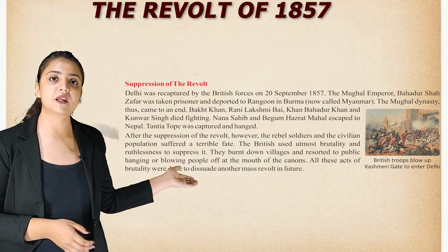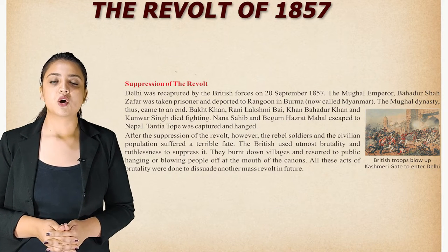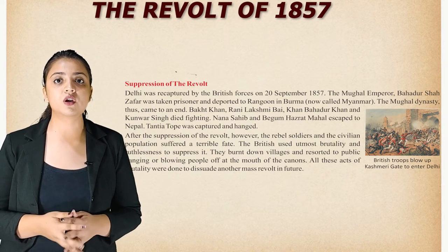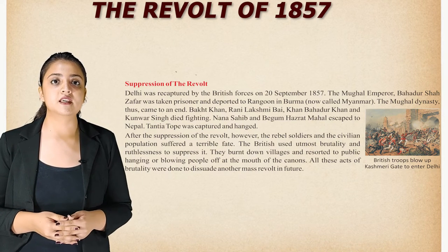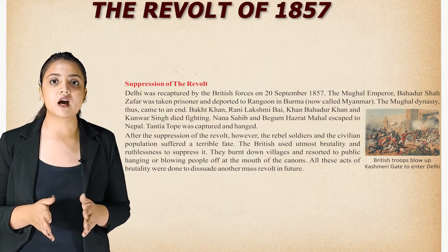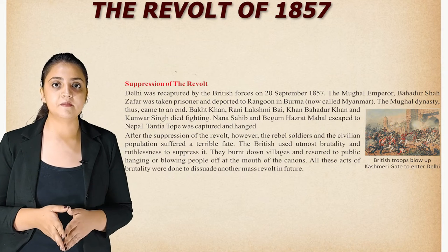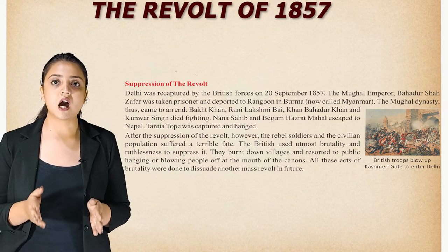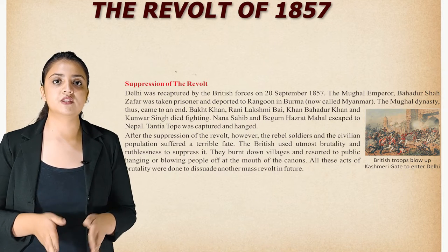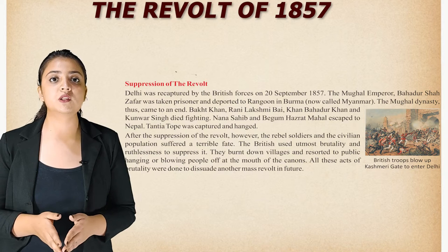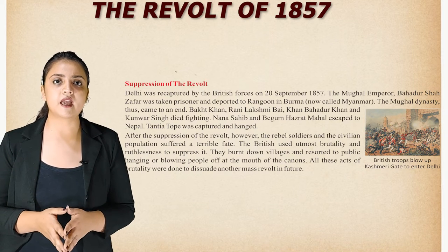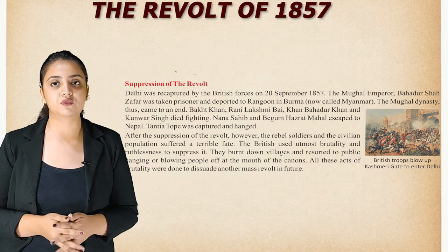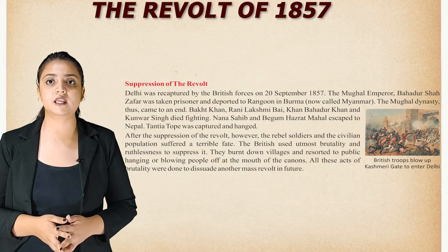Regarding the suppression of the revolt: Delhi was captured by British forces on 20th September 1857. The Mughal emperor Bahadur Shah Zafar was taken prisoner and deported to Rangoon in Burma, now called Myanmar, and the Mughal dynasty thus came to an end. Bakht Khan, Rani Lakshmibai, Khan Bahadur Khan and Kunwar Singh died fighting. Nana Sahib and Begum Hazrat Mahal escaped to Nepal. Tatya Tope was captured and hanged. After suppression, the rebel soldiers and civilian population suffered a terrible fate — the British used utmost brutality, burning down villages and resorting to public hanging or blowing people off at the mouths of cannons.